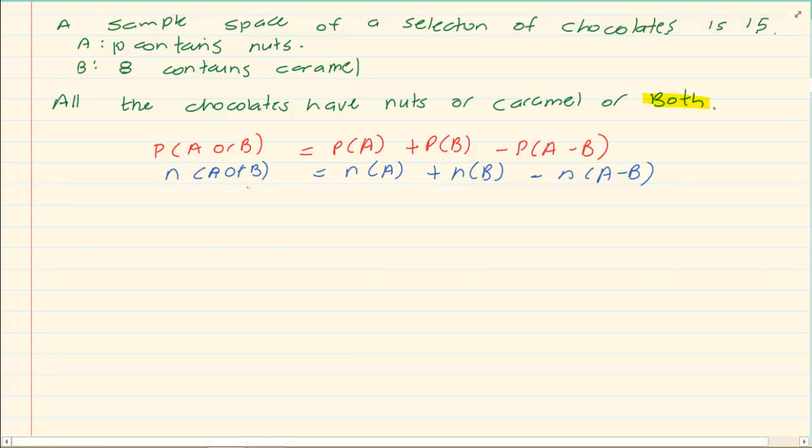Now I know N of A or B. They are telling me that all of them contain nuts or caramel or both, which means that all of these answers are in the sample space. So this is going to be 15. Then they tell me the N of A is 10. They tell me the N of B is 8. So I am seeing what do I have. Then I have an unknown because I don't know how many are overlapping. Now if you take the 10, let's take the X across. X would equal to 10 plus 8 which is 18 minus 15 which is equal to 3. So how many overlap? 3, which means that 3 have both nuts and caramel.